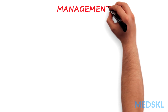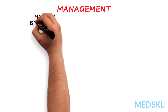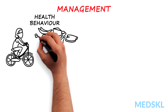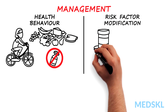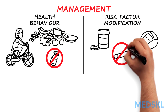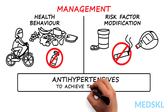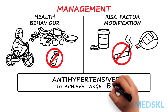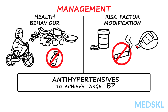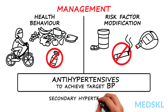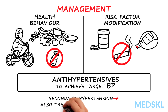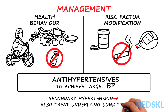Management of primary hypertension is based on health behavior changes and risk factor modification, as well as achieving target blood pressures through the use of antihypertensive medications and regularly scheduled blood pressure monitoring. Management of secondary hypertension is based on the same considerations, plus, in some cases, treating the underlying condition.